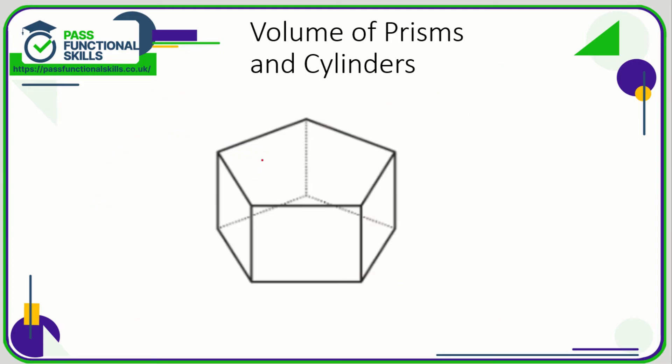You might get a strange shape. Here is a pentagonal prism. It's a pentagon, and you're not expected to know the formula for the area of a pentagon. We might be told that this is 50 square centimeters and the prism has got a height of 7 centimeters. Again, the volume of a prism is the area of its face multiplied by its depth or its height. That's simply going to be 50 multiplied by 7, which is 350 cubic centimeters.